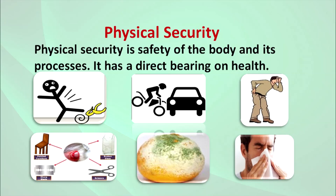What is physical security? We will talk one by one. Here you are seeing various images. In one image you are seeing a cartoon figure falling down after slipping on a banana peel. In another picture you are seeing an accident, possibly on the road, illustrating physical insecurity. A third image shows the impact on health — a back pain resulting from some kind of injury or physical security risk. In the fourth picture you can also see that a hand or finger is cut with bleeding.